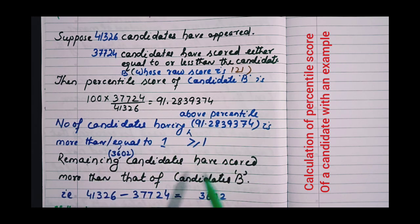Remaining candidates have scored more than that of candidate B. That is 3,602 candidates.